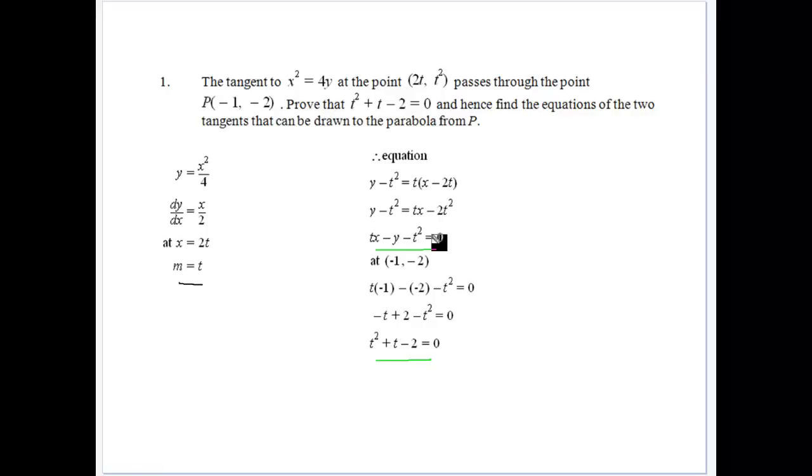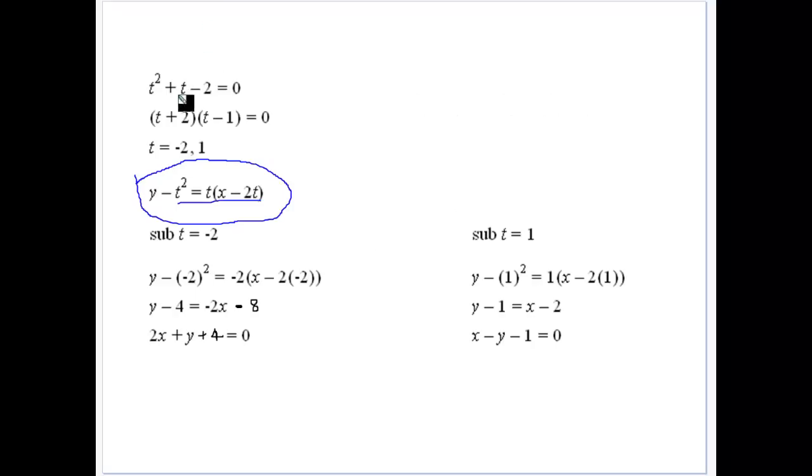So prove that t squared plus 2t minus 2 is equal to 0. From that, we need to go to the next part, which would be to solve that quadratic, and we get minus 2 and 1.